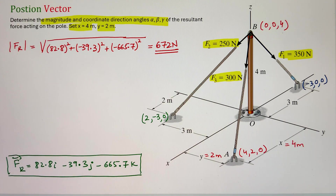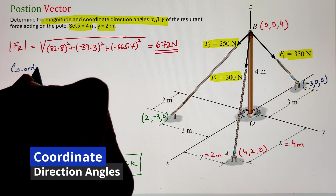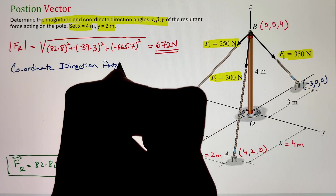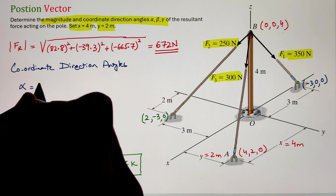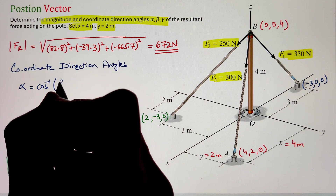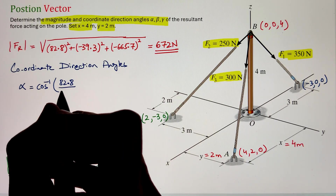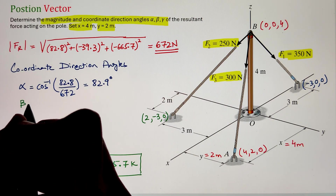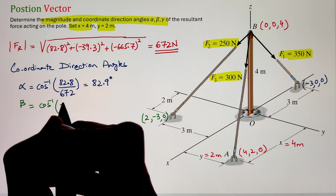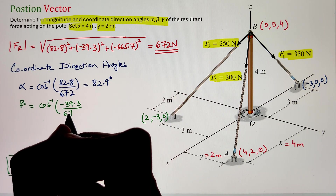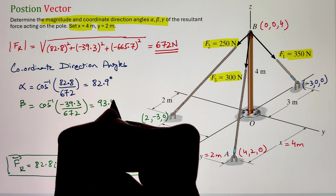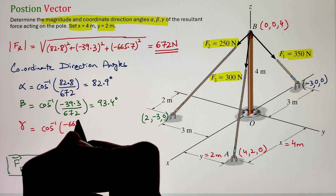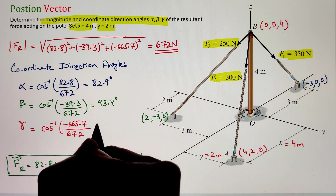Now we can calculate the coordinate direction angles. Alpha is the angle the resultant makes with the X axis, calculated as cos inverse of the X component divided by the magnitude: cos inverse of 82.8 divided by 672, giving 82.9 degrees. Beta equals cos inverse of negative 39.3 divided by 672, which is 93.4 degrees. Finally, gamma equals cos inverse of negative 665.7 divided by 672, which equals 172 degrees.